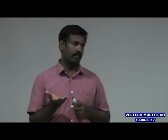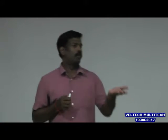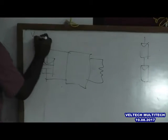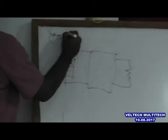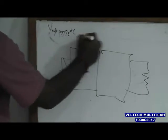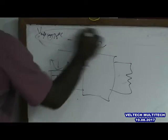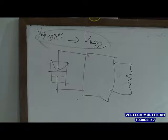So you can take the junction temperature, say 75 degree Celsius. At 75 degree Celsius, what is the Vmpp? You can find out. So the variation in the input voltage is now VMPP at 75 degree Celsius to the VMPP later. This is the change in the input voltage which can occur.